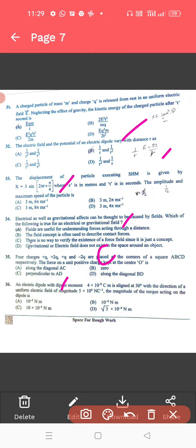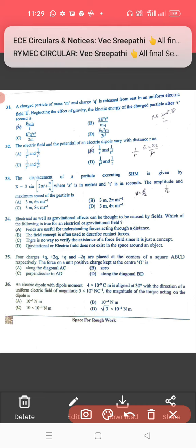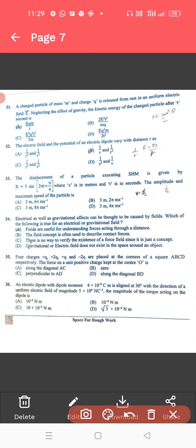A charged particle. So, a charged particle. The correct answer is, it is E square, Q square, T square. E square, Q square, T square, that is C. For 32, the correct answer is electric field. So, the correct answer is 1 by R cube, 1 by R square.